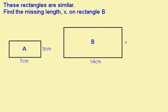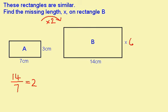In this question, because I'm told that the rectangles are similar, I can find the scale factor of enlargement. These two sides here are corresponding, so my scale factor is 14 over 7, which is 2. So to get from this one to this one, I multiply by 2. I want to find this length here. This length is corresponding, so I'm going to do 3 times 2, which gives me 6.